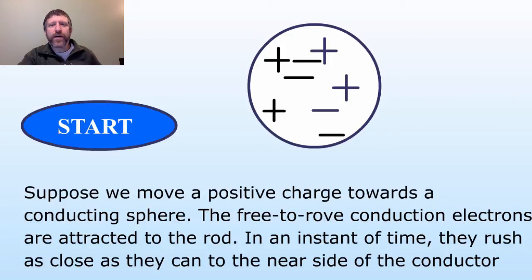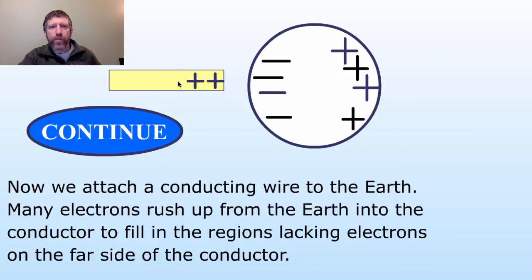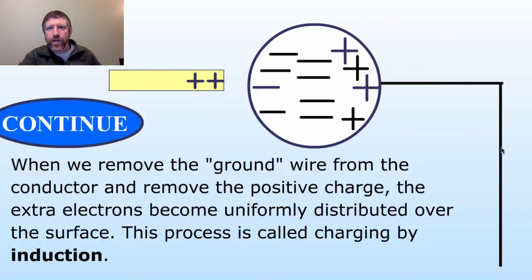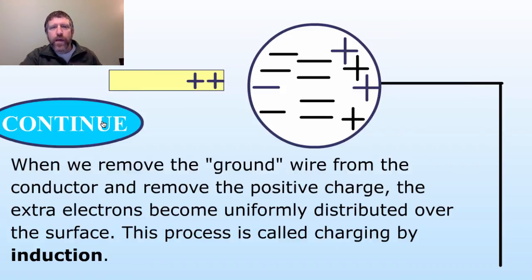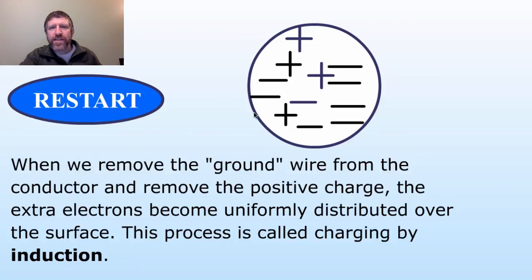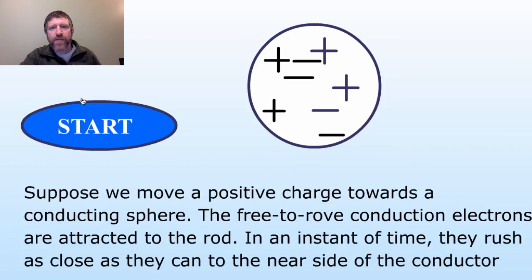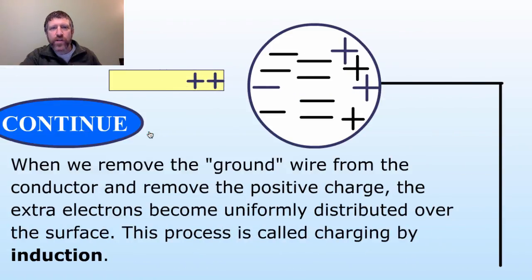This applet gives us an animation of what charging by induction actually looks like. It starts with polarization — a positively charged rod brought nearby polarizes the conductor. In the next step, we ground the conductor, and negative charges come up from the earth, attracted because they're closer to the positive charges on the near side of the conductor. Once we take the ground away and remove the charged rod, we can see the conductor is charged negatively — eight negative charges versus four positive. It is now charged negatively by induction. Notice that during this process, the rod doesn't lose any of its charge.